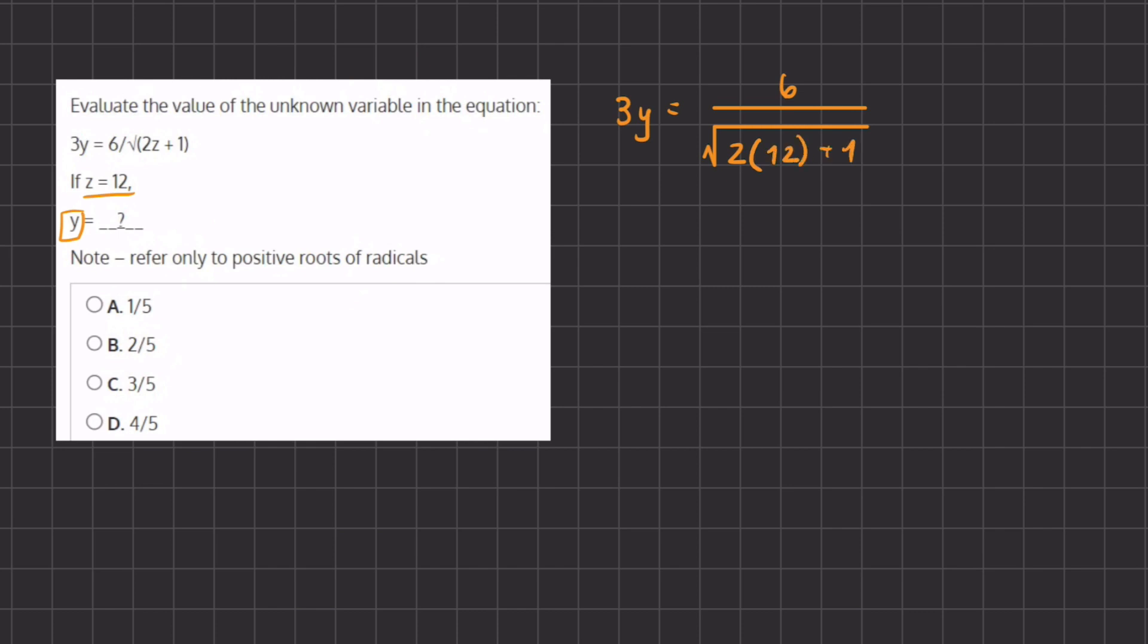Now let's simplify what we have inside of the square root. We have 3y on one side equals 6 divided by 2 times 12, which is inside of our square root. So that's 24, 2 times 12, plus 1, which gives us 25.